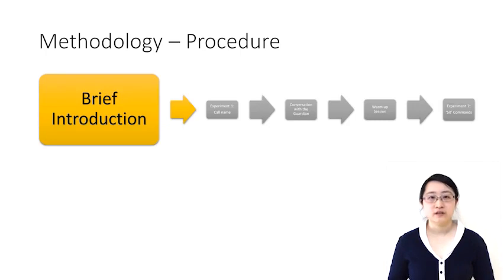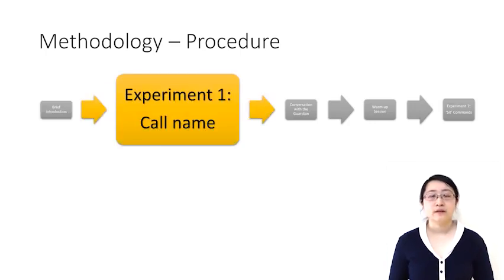Here's the procedure. The study started with a brief introduction between the dog, the dog's guardian, and the robot. The brief introduction was followed by experiment 1, the robot calling the dog's name. Here are a few examples.